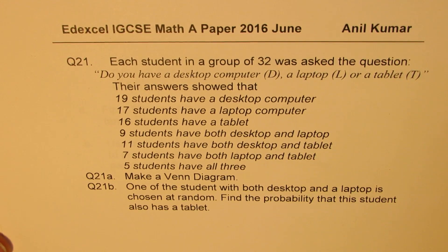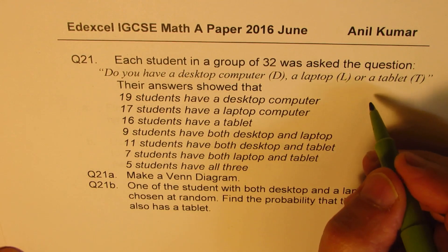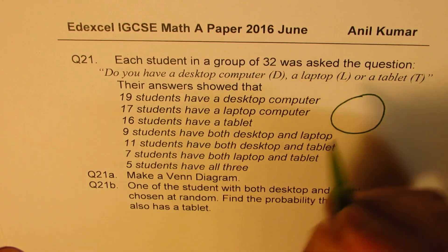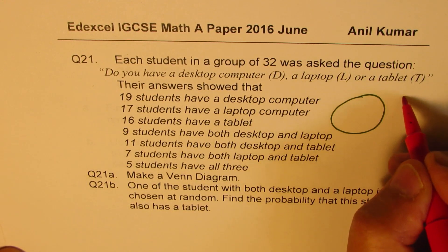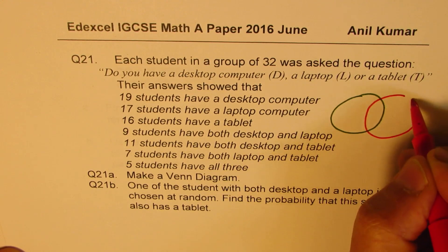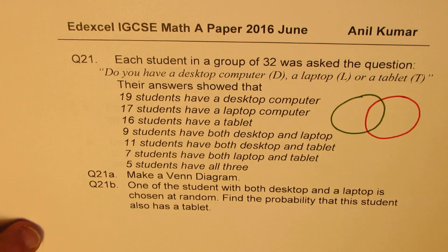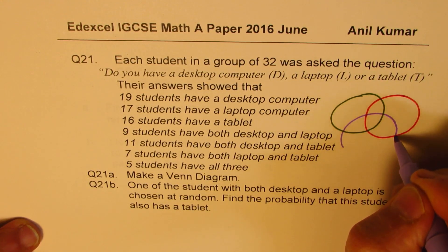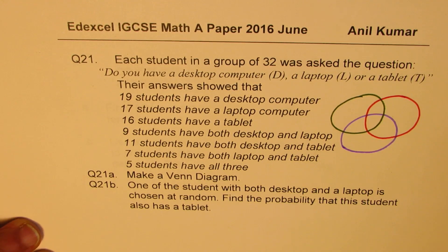We're talking about three things, so we'll make three circles. Let's say one is for desktop, the second for laptop, and the third for tablet. We'll assume there is an overlap, and all the numbers are given to us in our sample space.